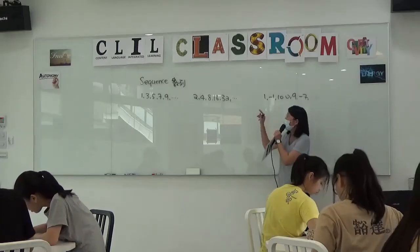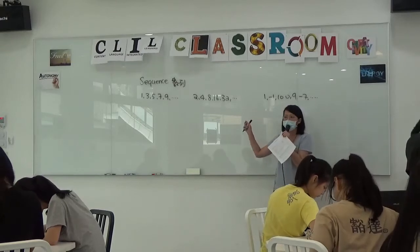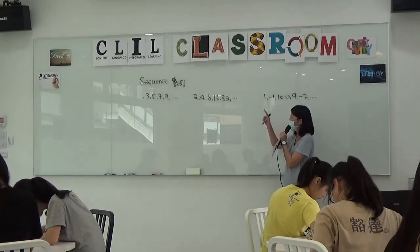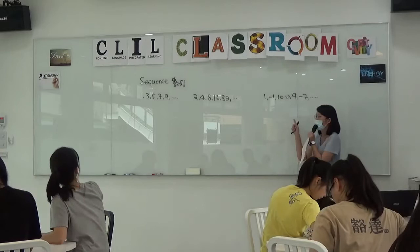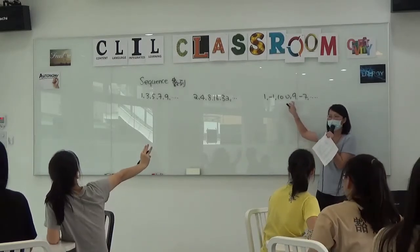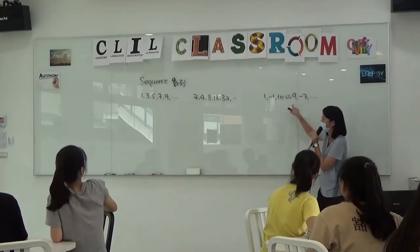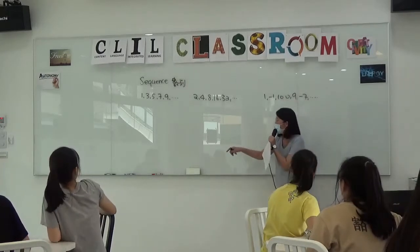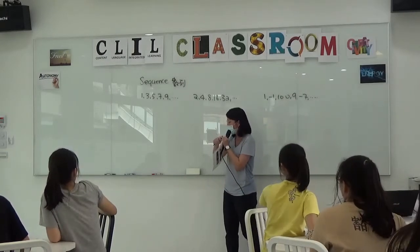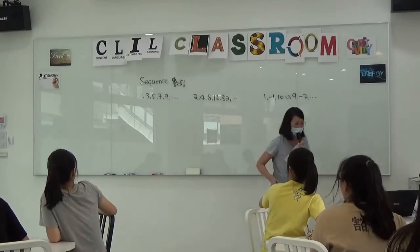Let me talk about sequences which have a rule, so you can tell which one doesn't have a rule. That one doesn't. We are not going to talk about that one. We are going to talk about these two, which are actually two kinds of sequences that are really common.